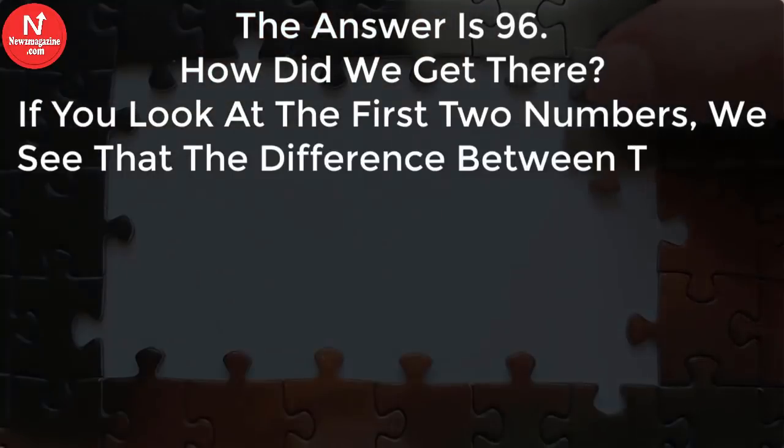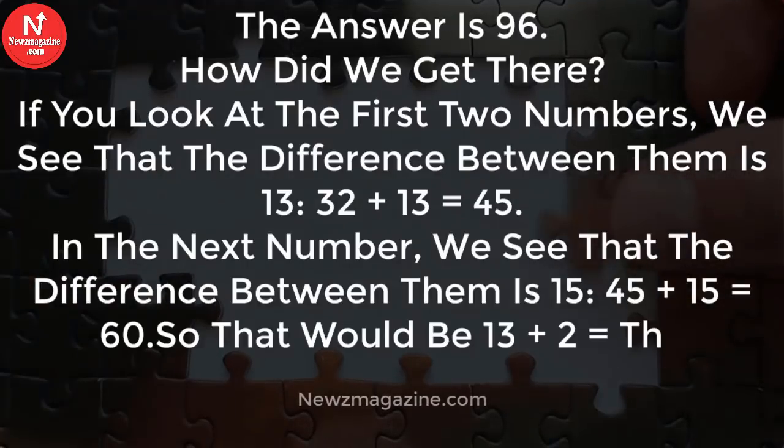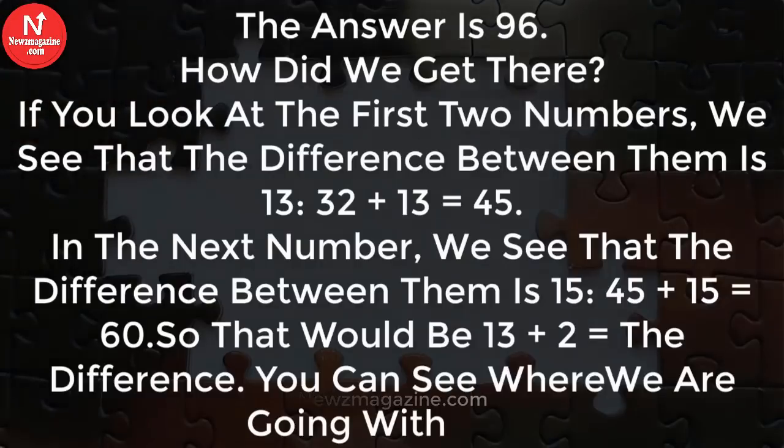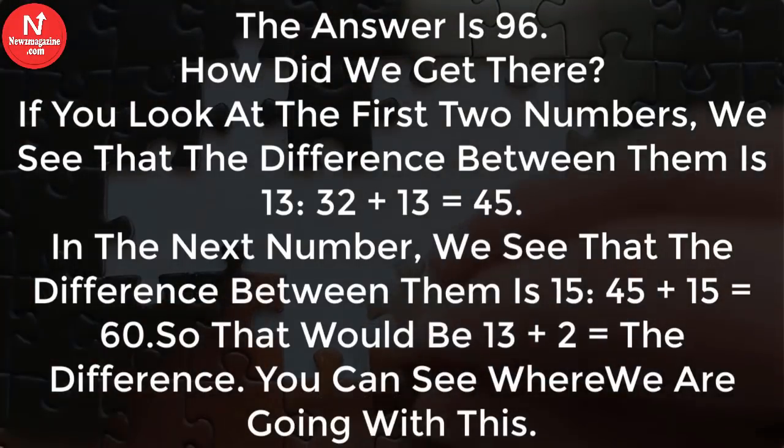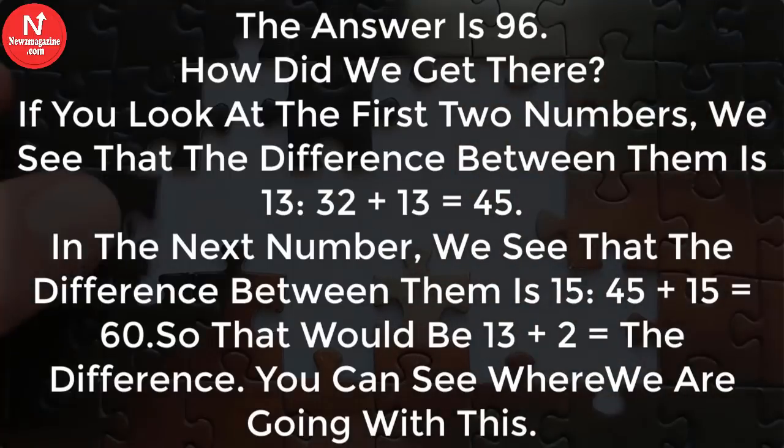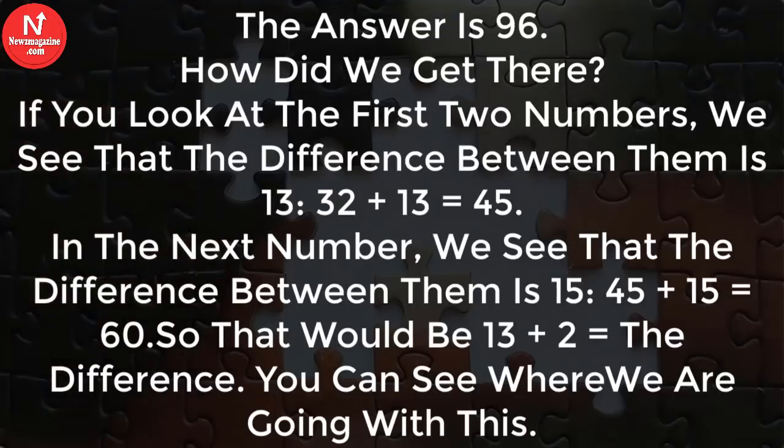How did we get there? If you look at the first two numbers, we see that the difference between them is 13. 32 plus 13 equals 45. In the next number, we see that the difference between them is 15. 45 plus 15 equals 60.